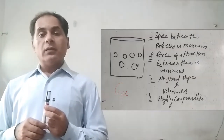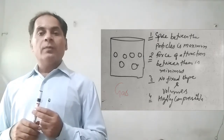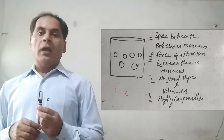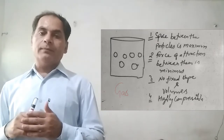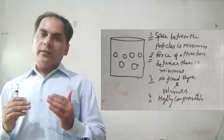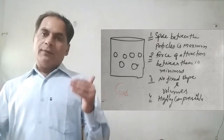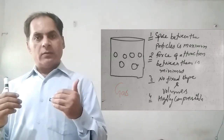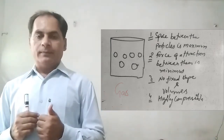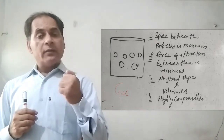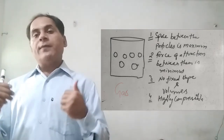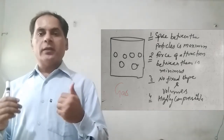First, gas. Gas is the state of matter in which the molecules, atoms, or ions have large intermolecular space between them. In the gaseous state, the atoms are very very far from each other. Because of this space, they can expand to a large extent. The intermolecular space — that is, the space between the molecules in the gaseous state — is maximum.